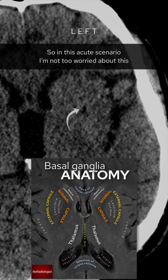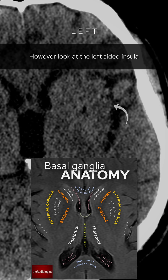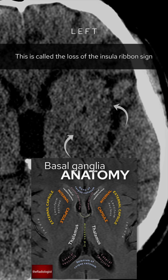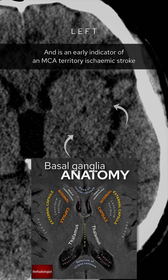In this acute scenario I'm not too worried about the lacunar infarct. However, look at the left insula — it's a similar density to the internal capsule. This is subtle but abnormal. This is called loss of the insular ribbon sign and is an early indicator of an MCA territory ischemic stroke.